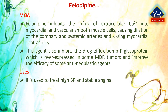Felodepin inhibits the influx of extracellular calcium ions into myocardial and vascular smooth muscle cells, causing dilation of the main coronary and systemic arteries and decreasing myocardial contractility. This agent also inhibits the drug efflux pump P-glycoprotein, which is overexpressed in some multi-drug resistant tumors, and may improve the efficacy of some anti-neoplastic agents.